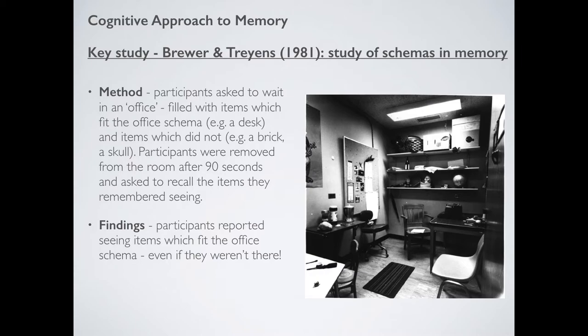What Brewer and Treisman found is quite interesting. Participants reported seeing the items which fit the office schema — typewriter, folder, pinboard. But then they also started noting down things like books, shelves, a bookcase — various things which were not in the room whatsoever. So the participants' schema was somehow influencing what they actually saw. Even if they didn't see it in real life, because they had a schema for an office, they expected those items to be there. Brewer and Treisman also found that participants didn't remember the vast majority of the odd items, because those things did not fit their schema.